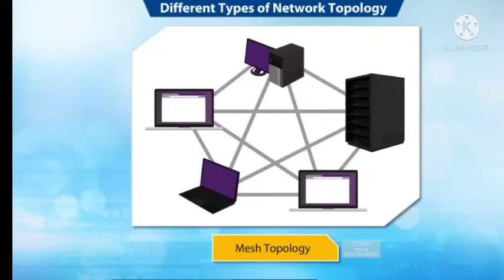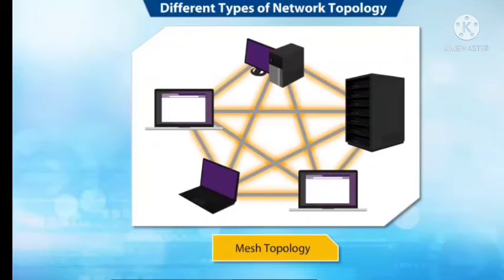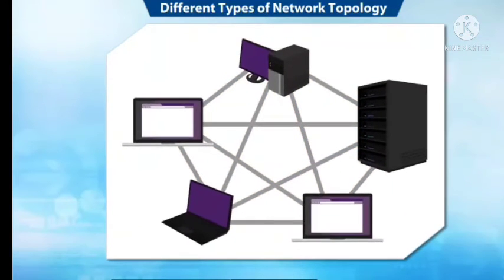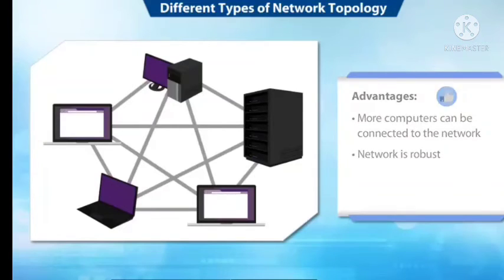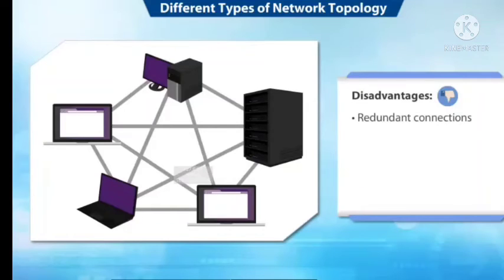Now let us look at a slightly more complex type called mesh topology. In mesh topology, every node has a direct point-to-point connection to all other nodes. Because all connections are direct, the network can handle a high volume of traffic. The advantage of mesh topology is that it can connect more computers and the network is robust. The disadvantage is that it has redundant connections because every device is connected to all other devices, and if one device fails the entire network goes down.